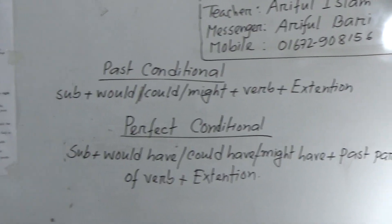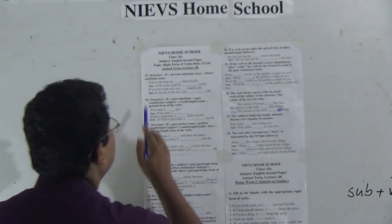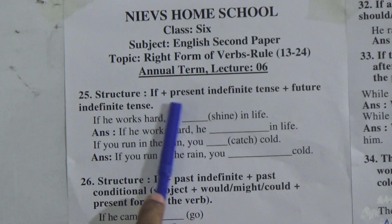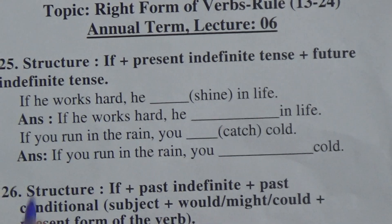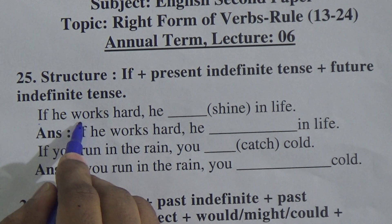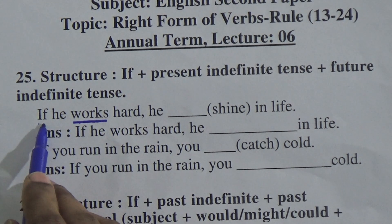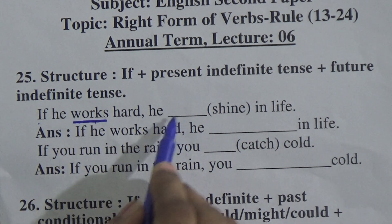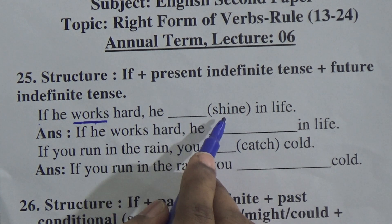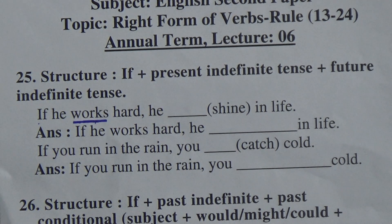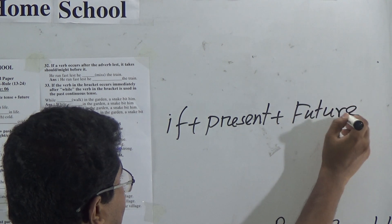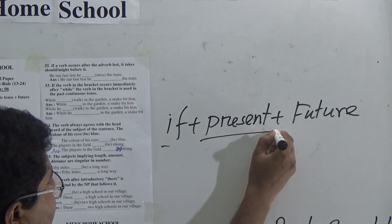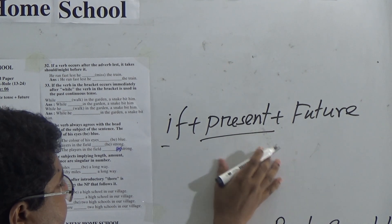Let us start the class. Rule 25: structure is if + present indefinite tense + future indefinite tense. After 'if', if present indefinite tense comes, we will do the other clause in future indefinite tense. So the structure is: if + present + future.